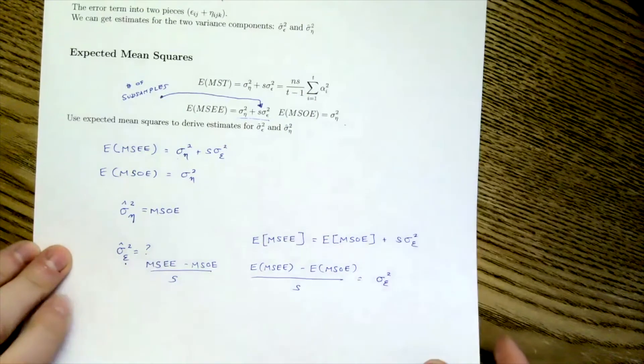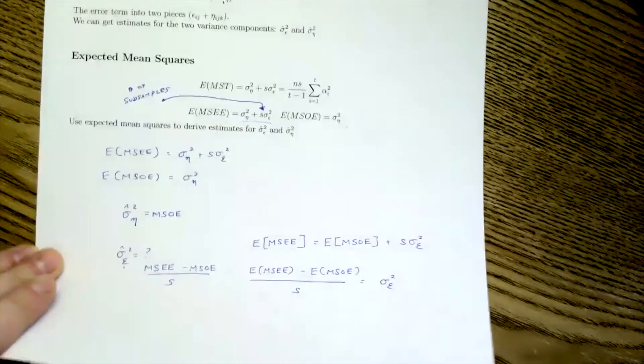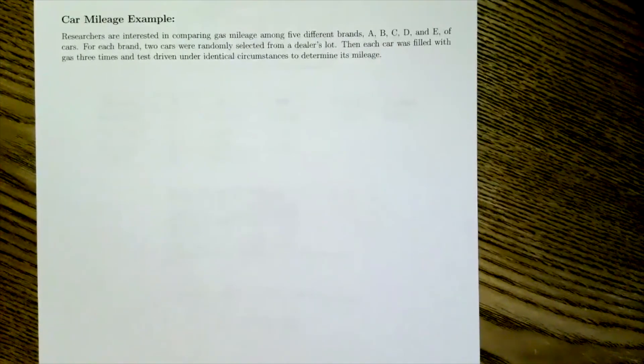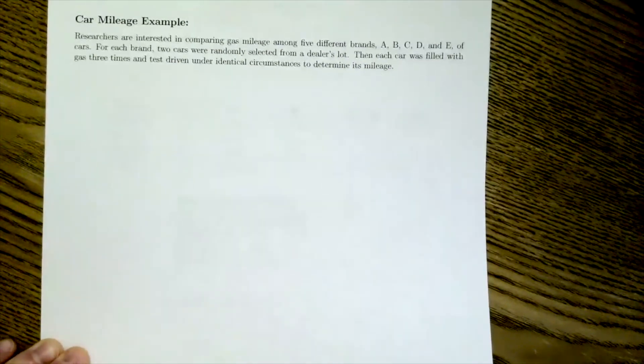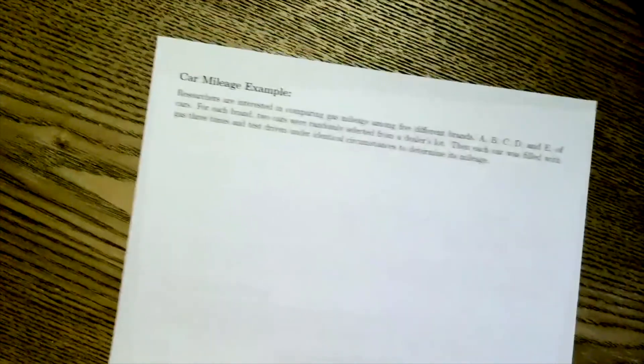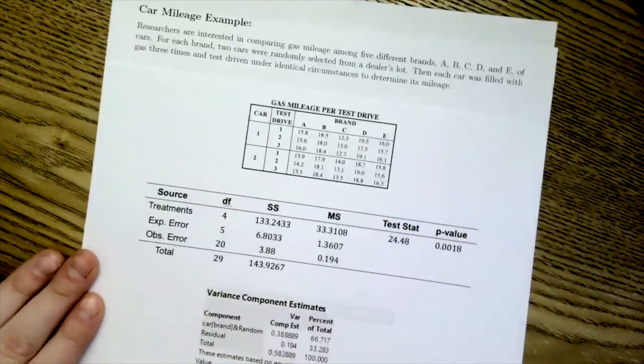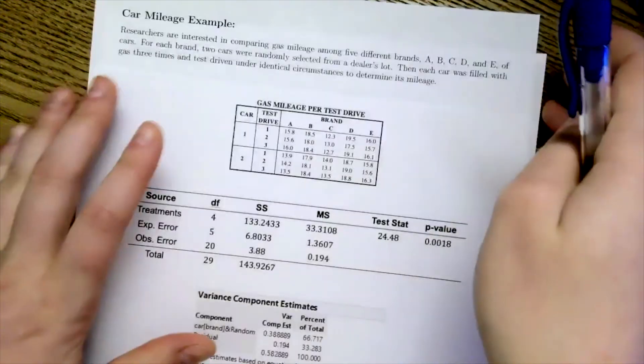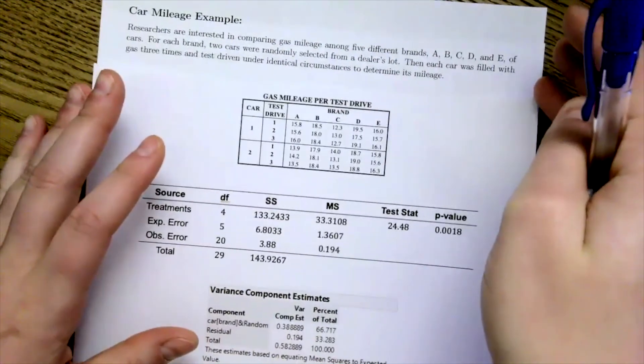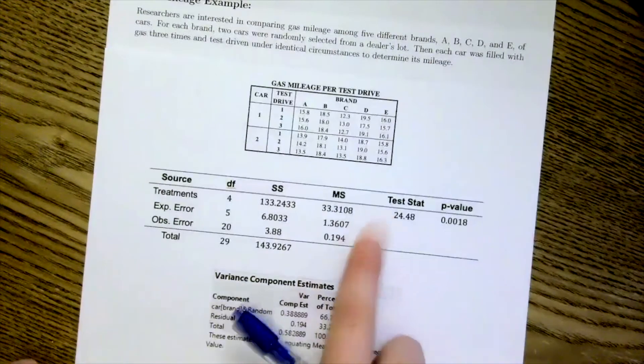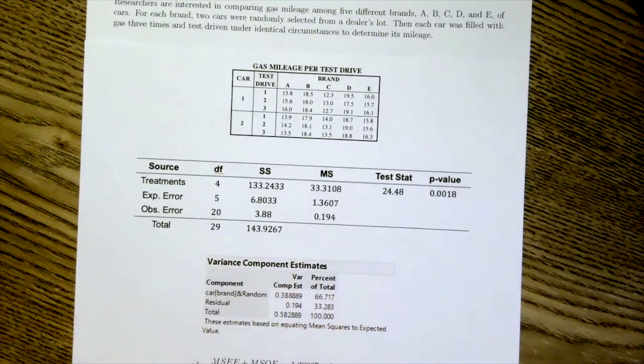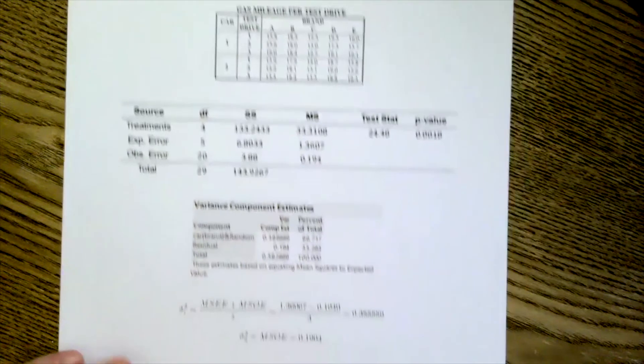With that all in place, let's now go to our car example. Alright, my printer did something weird, but that's okay. So again, our car example, we had five brands, we had three subsamples, and we did this analysis last time.